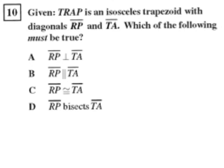Okay, question 10 from the CST Geometry Release Test questions. Given TRAP is an isosceles trapezoid with diagonals line segment RP and line segment TA, which of the following must be true?